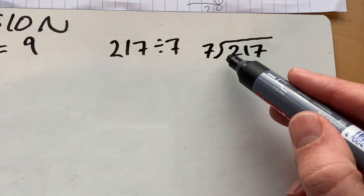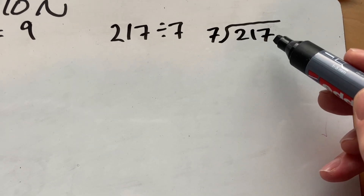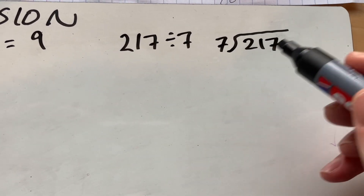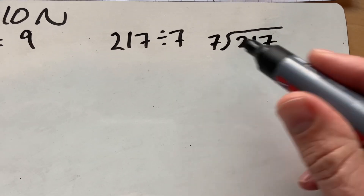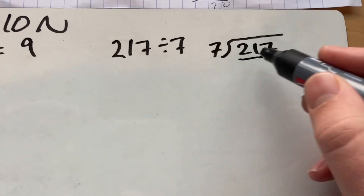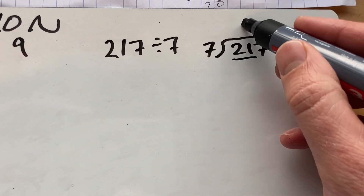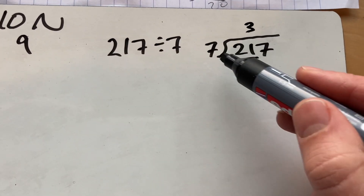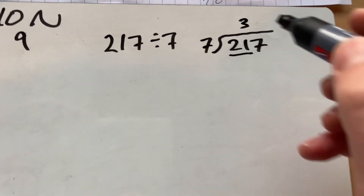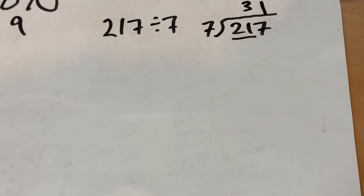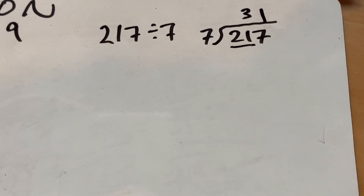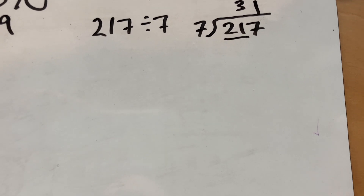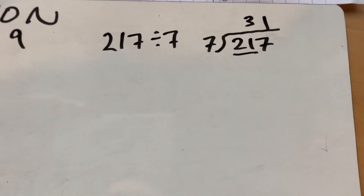We go from left to right — rather than, say, times or adding where we look at the units first. 7 doesn't go into 2, but it does go into 21. It goes into 21 three times with no remainder. And then it goes into 7 once. So 217 is 31 times 7. You could check that on a calculator.